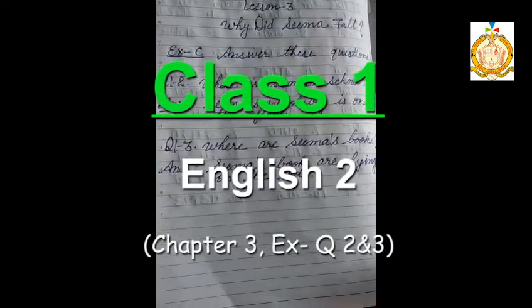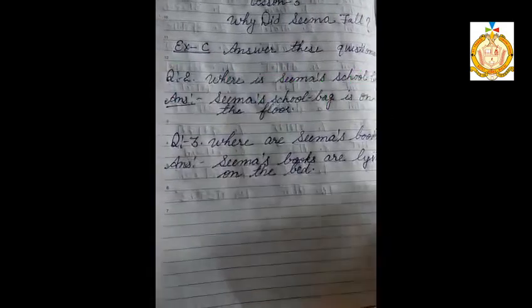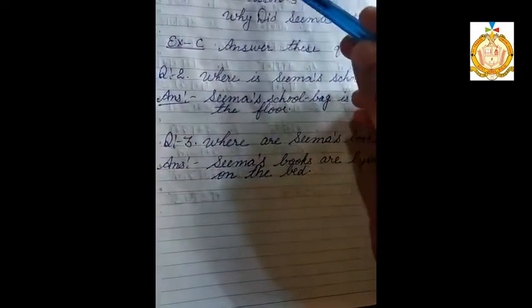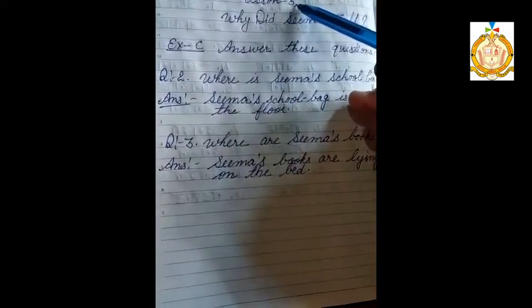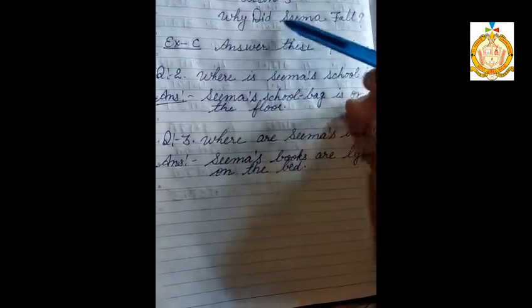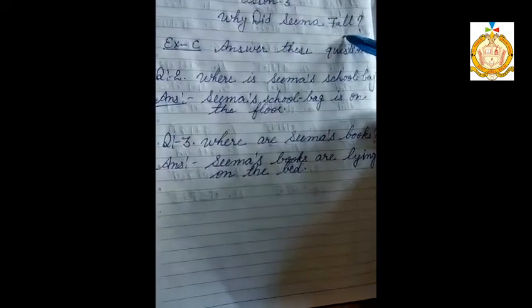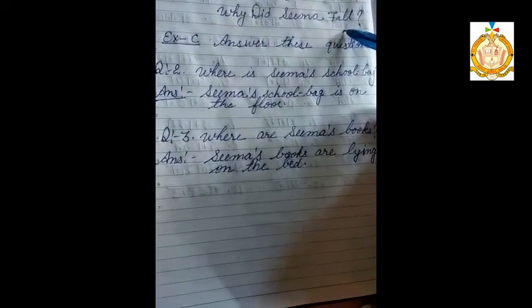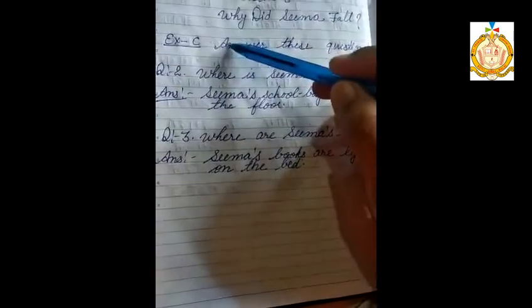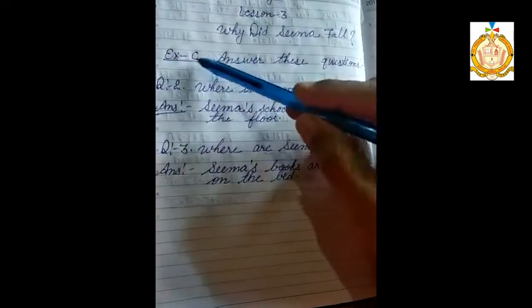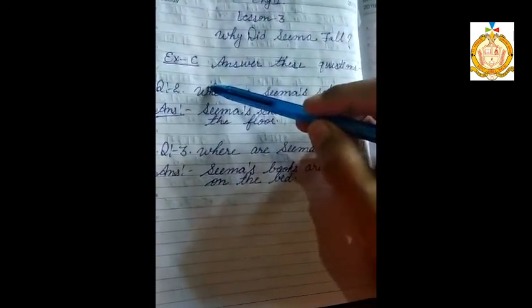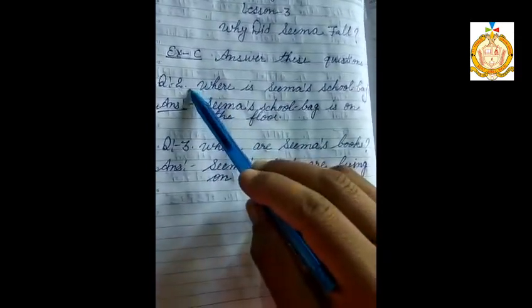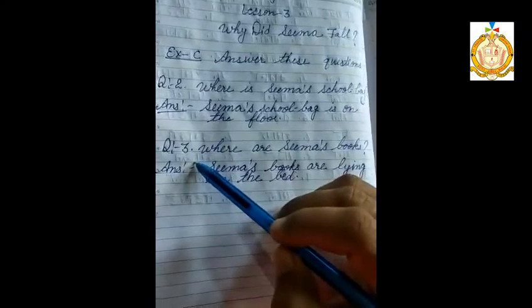Good morning students. Today I'm going to start my next topic of English 2 of class first, lesson number 3: Why Did SEMA Fall? We have already completed the explanations and exercises A and B. Now we will start exercise C. The first question we have already done. Today we will do questions number two and three.